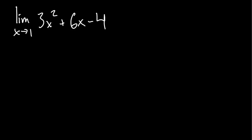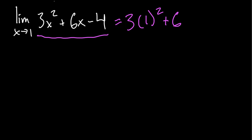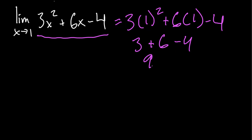Since this quadratic is continuous for all x, we know the limit as x approaches 1 is equal to the function 3x² + 6x − 4 evaluated at x = 1. Because this function is continuous, all we have to do to find the limit is substitute x = 1: three times 1² plus six times 1 minus four. That gives us 3 + 6 − 4, which is 9 − 4, which equals 5. So our limit is equal to 5.